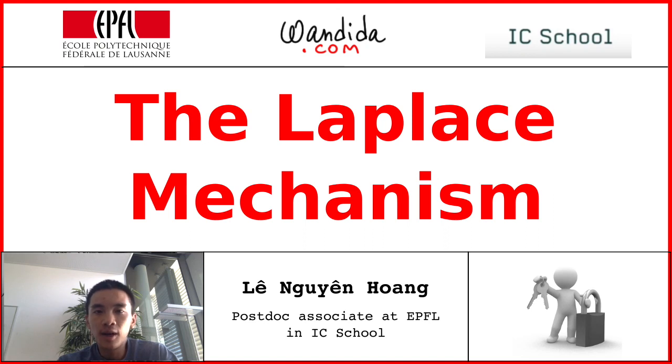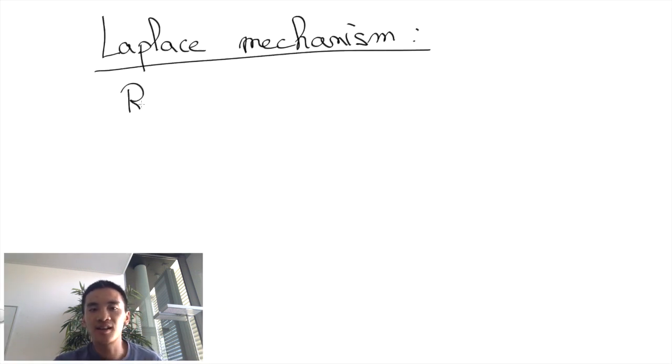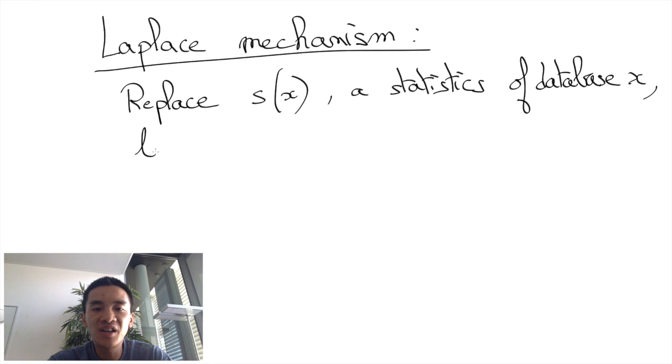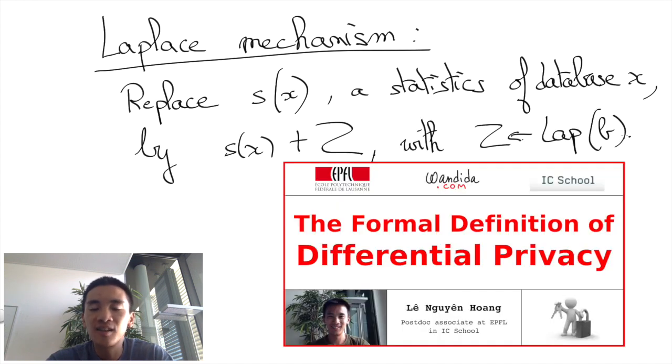In this video I will present the Laplace mechanism whose crucial property is that it is differentially private. The basic idea of the Laplace mechanism is that when you are asked to reveal a statistics S about a database X, adding a random noise Z to the statistics will make it differentially private.